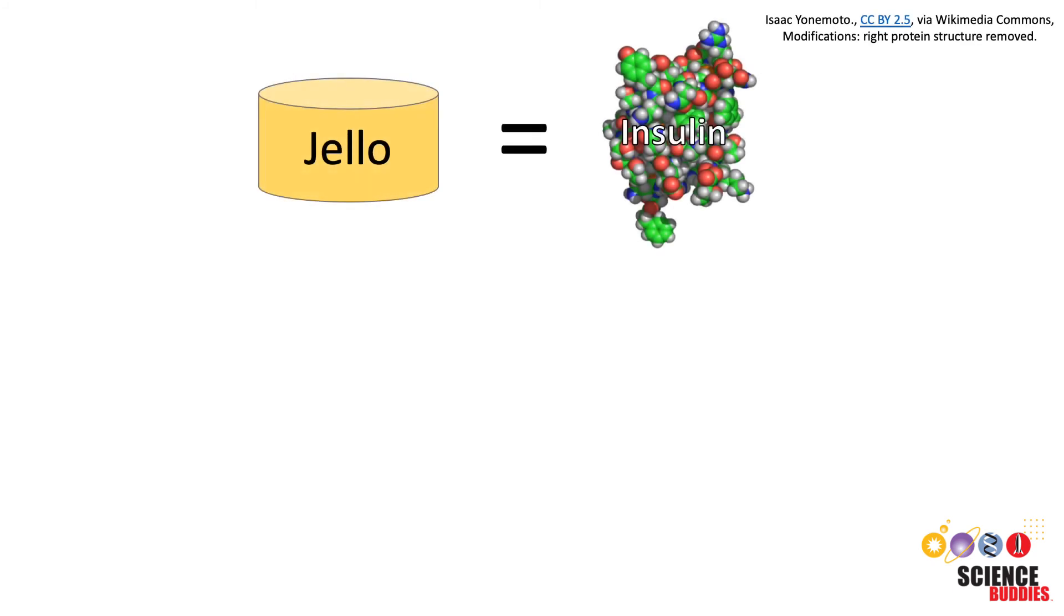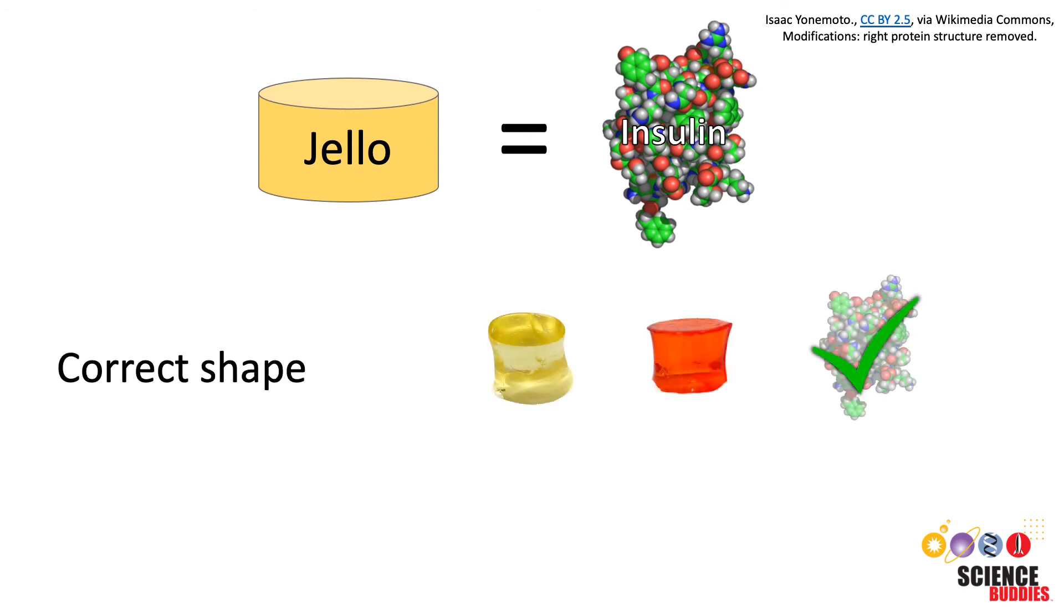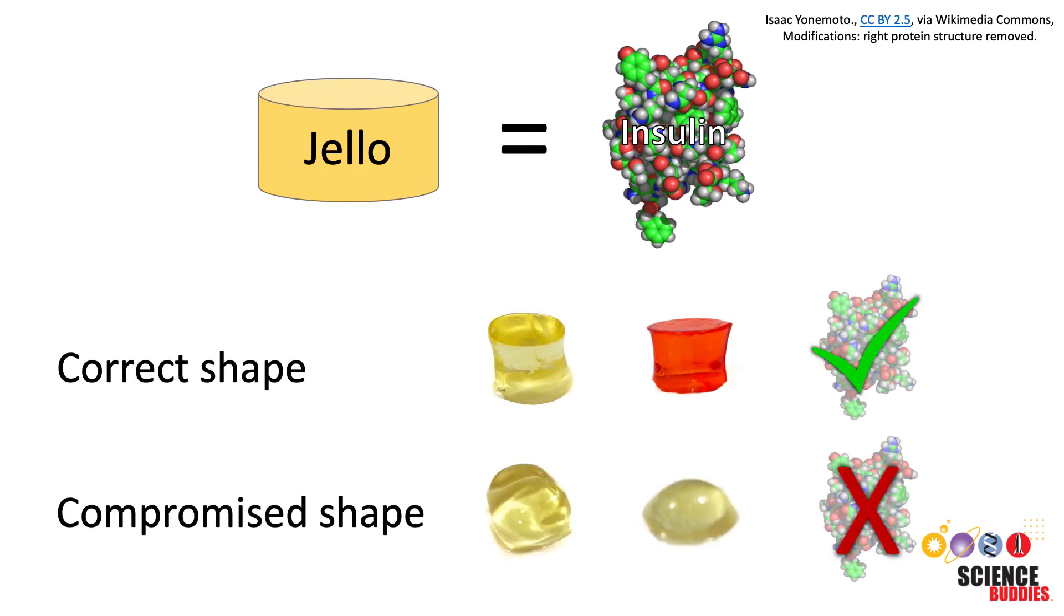When assessing the jello shapes, keep in mind that they represent the peptide hormone insulin. If the jello shape or three-dimensional structure has been compromised in any way, this means that the insulin has become ineffective.